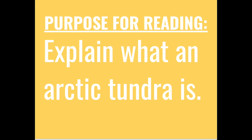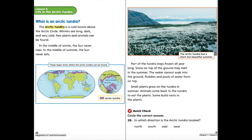Our purpose for reading today is to be able to explain what an arctic tundra is. The arctic tundra is a cold biome above the arctic circle. Winters are long, dark, and very cold. Few plants and animals can be found. In the middle of winter, the sun never rises. In the middle of summer, the sun never sets. Part of the tundra stays frozen all year long.